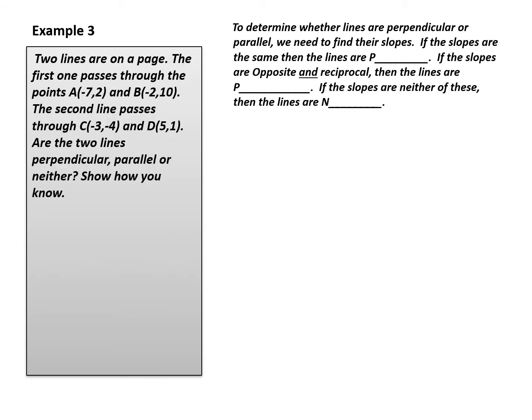Example 3. This is a little more difficult because it requires a bit more interpretation. We are told that two lines are on the page: the first passes through points A and B, and the second passes through C and D. Are the two lines perpendicular, parallel, or neither? To determine this, we need to find the slopes of both lines. If the slopes are the same, they are parallel; if the slopes are opposite and reciprocal, they are perpendicular; otherwise, neither.